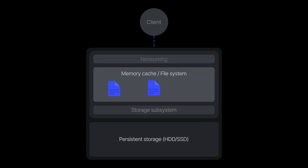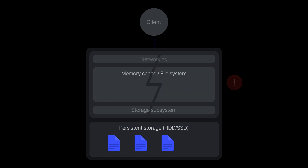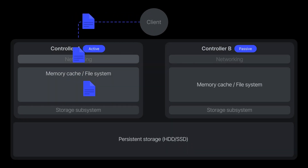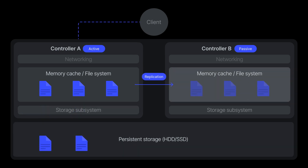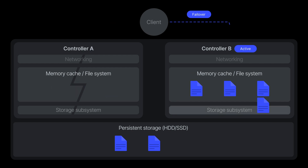Caching occurs through your networking equipment, the system's memory, and even cache located on storage drives. When a power loss or system issue occurs, data stored in cache is more often than not lost for good. With DSM 7, we're ensuring that cache data in system memory is also replicated between controllers, helping maintain data integrity even for data that hasn't been fully committed yet.